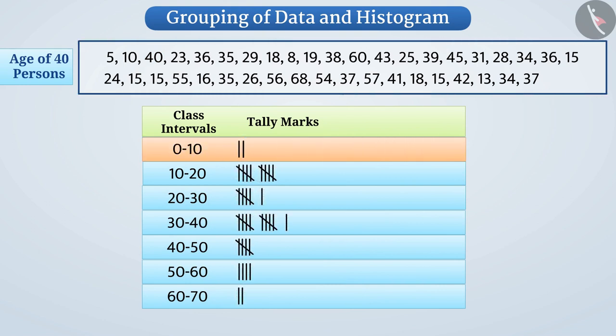Now here, there are two tally marks in the class interval 0 to 10. Can you tell me what do you understand from this? Let me tell you, these two tally marks denote observations 5 and observation 8. In this way, the number 2 tells the number of observations that are included in class interval 0 to 10, i.e., there are two persons between the ages 0 and 10 years. We call it the frequency of class interval 0 to 10.